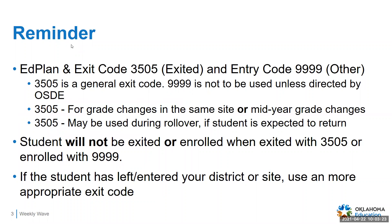We are still getting some questions about Ed Plan and why some students are either still appearing in their district or why they are not appearing in Ed Plan. Usually the two situations we're seeing right now are the usage of the exit code 3505 and the usage of the entry code, or in some cases even the exit code of 9999, which in both situations just means 'other.' We're not expecting to ever get the entry or exit code of 9999 unless our office specifically comes out with guidance directing you to use that code. It is expected to only be used in emergency legislation.